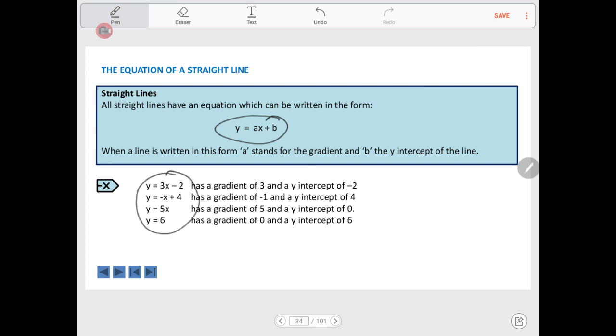Okay, in this case, the first one, y equals 3x take 2, a equals 3, and b equals negative 2.